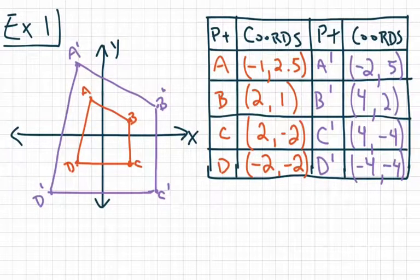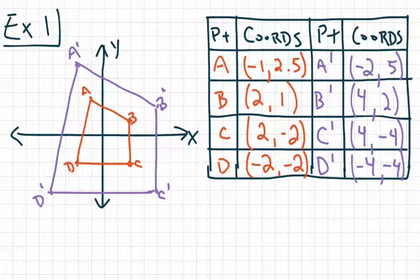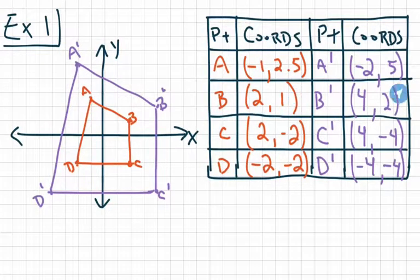For our first example, we have two quadrilaterals in a coordinate grid. We have the original pre-image as quadrilateral ABCD, and our image as A', B', C', and D'. In the table, I give you the names and coordinates of all the points. I want you to copy down the graph and table, then see if you can identify a pattern to get from the original coordinates to the prime coordinates. For example, for D and D', how do we get from negative 2, negative 2 to negative 4, negative 4?